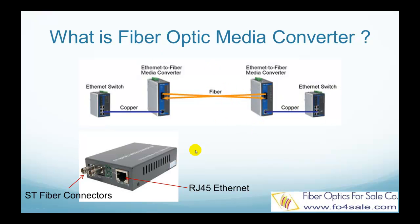Twisted pair cable, coaxial cable, and other copper cabling can only support a limited length before the signal becomes too weak. On the other hand, optical signal can propagate in fiber cables for very long distances before the signal becomes too degraded. So fiber optic cable is used to extend the network from 2000 meters up to 120 kilometers.